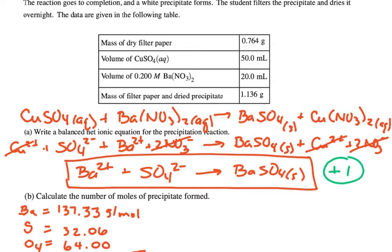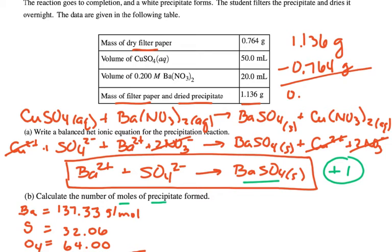Now part B says calculate the number of moles of precipitate. So now we know our precipitate is barium sulfate. So let's go back to our data. And so what do we have? We have dried precipitate and the filter paper together weighs 1.136, but the filter paper by itself weighs 0.764. So the mass of the precipitate will be 1.136 grams minus 0.764, which will be 0.372 grams of barium sulfate.